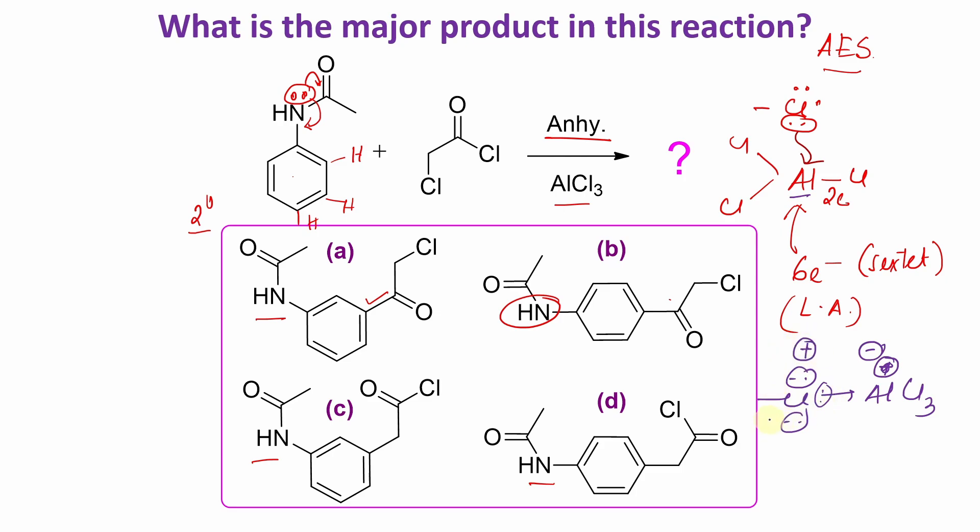Chlorine, electronegative atom carrying a positive charge is not that much stable. So this RCl, this bond can break, resulting in R plus plus AlCl4 minus. This R plus is actually the electrophile.